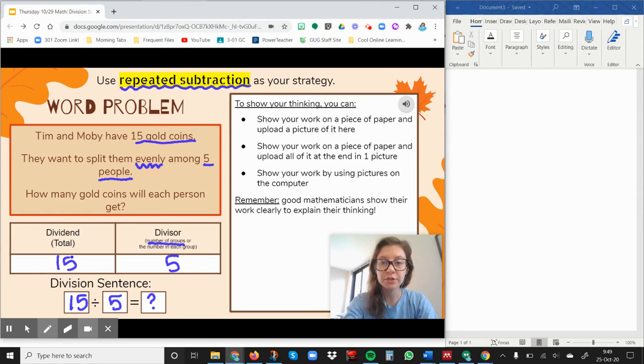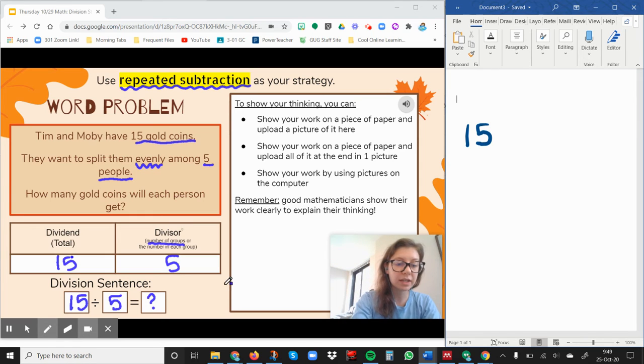So to use this strategy we start with our total, our dividend. So we have 15 as our total. Now we're going to repeatedly subtract and we're going to repeatedly subtract the number that we have as our divisor. It's the number of groups. So we can think about it as giving one to each person.